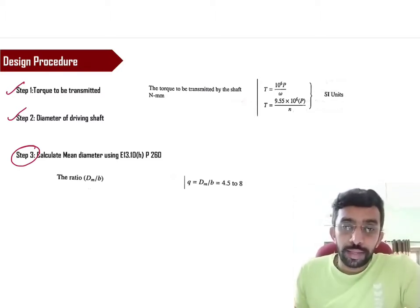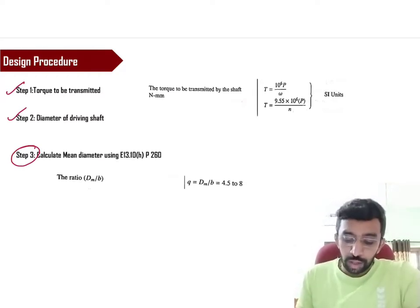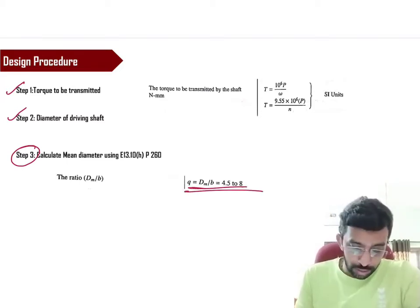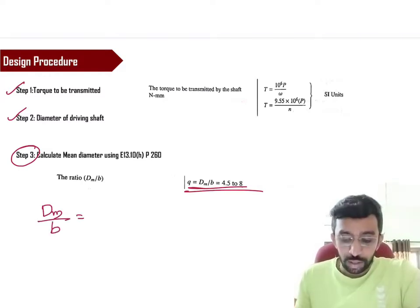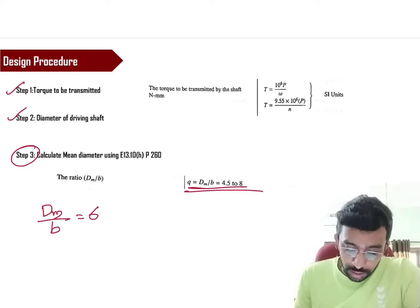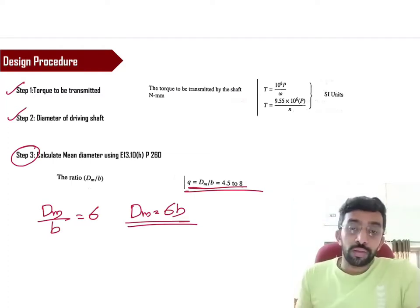Here, we are not calculating dm based upon the uniform wear condition or uniform pressure condition. Instead, we are going to assume the value of dm with the help of a ratio. Let's say I will assume it as dm/b = 6. You have the freedom to assume it from 4.5 to 8. Say I assume it for 6. So, I will write dm as 6b. That is the important thing. So right now, we have the value of dm in terms of b.